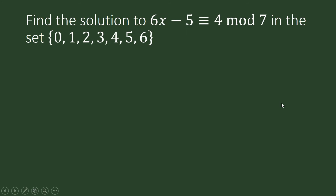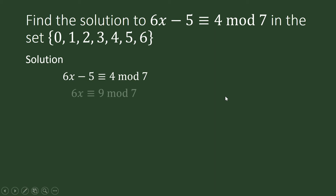Find the solution to 6x minus 5 is congruent to 4 modulo 7 in the same set. We apply the properties of modular arithmetic and congruence, and add 5 to both sides. This becomes 6x is congruent to 4 plus 5 is 9, and 9 is congruent to 2 modulo 7, since when you divide 9 by 7, the remainder is 2.